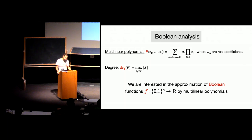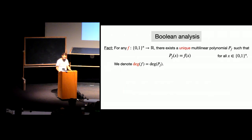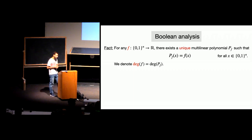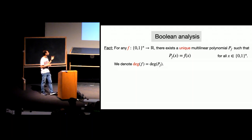We want to understand how we can approximate arbitrary Boolean functions — any function f from the hypercube to the real numbers — by multilinear polynomials. The first answer is that for any Boolean function, there exists a unique multilinear polynomial pf that equals the function for all input values. Because of this uniqueness, we can define the degree of any function f as the degree of the corresponding multilinear polynomial.